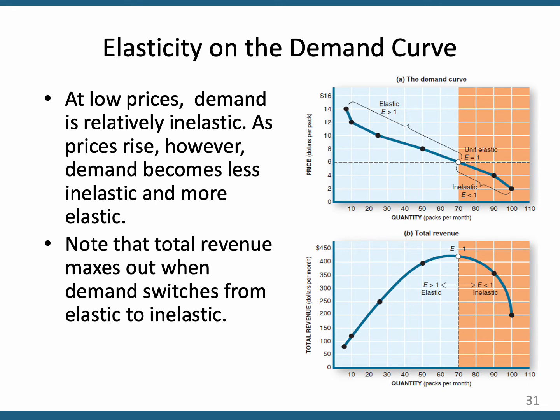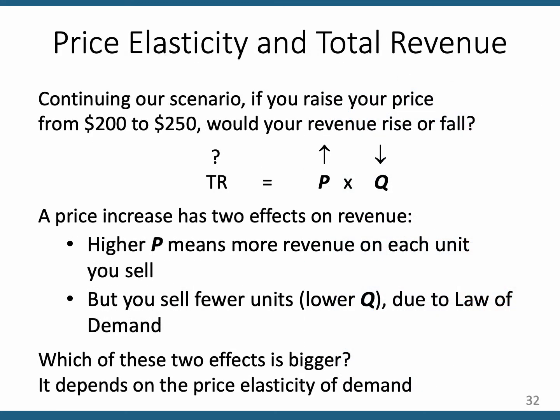Looking at total revenue below, with quantity on the x-axis and dollars on the y-axis, as you lower price and move right, total revenue rises in the blue elastic region, reaches unit elasticity, then falls. I like to use the total revenue equation TR = P × Q and draw arrows above P and Q, adjusting their sizes depending on whether the quantity change is greater or smaller than the price change.